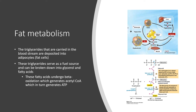Now let's talk about fat metabolism. The triglycerides carried in the bloodstream are deposited into adipocytes — the fat cells. Essentially, the fat flowing around in the bloodstream is deposited into your fat cells to store energy. These triglycerides stored in fat cells can serve as a fuel source and be broken down into glycerol and fatty acids. These fatty acids undergo beta-oxidation, which generates acetyl-CoA, which in turn generates ATP. Through beta-oxidation, fatty acids are broken down two carbons at a time, releasing energy until the fat is completely broken down.